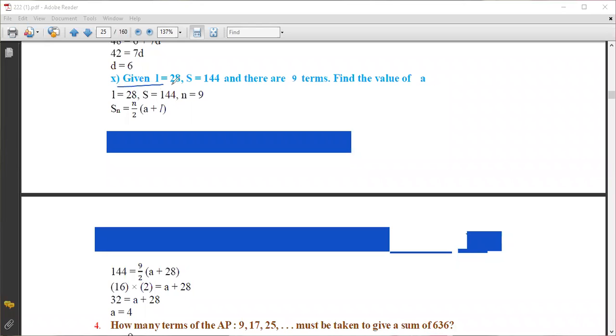Okay, now look at here. Given i is equal to 28, Sn is equal to 144, and there are nine terms. Therefore n is equal to 9, last term l is equal to 28, or you can write it as 'a' sub n also, and Sn is equal to 144. Now find the value of a.